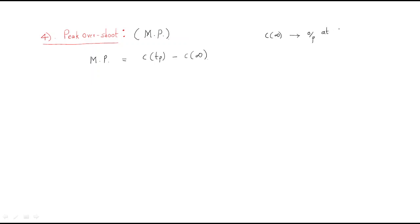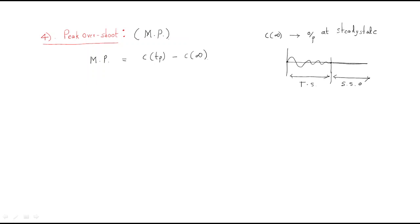Steady state is the final constant output value. The actual output varies over time before settling to that constant value — this varying period is the transient state output. We can also express peak overshoot as a percentage: (output peak minus steady state output) divided by steady state output, multiplied by 100.